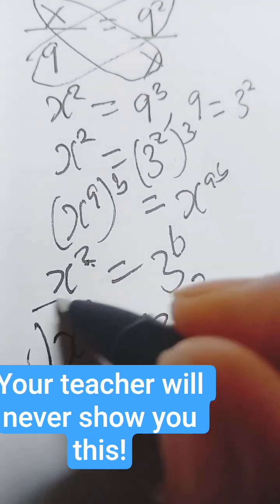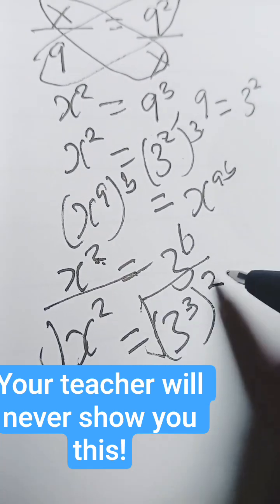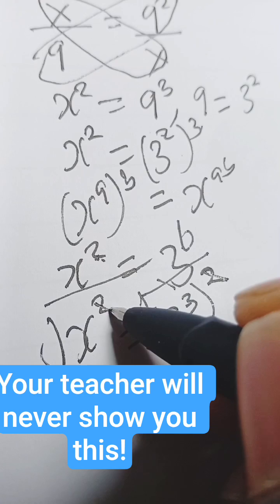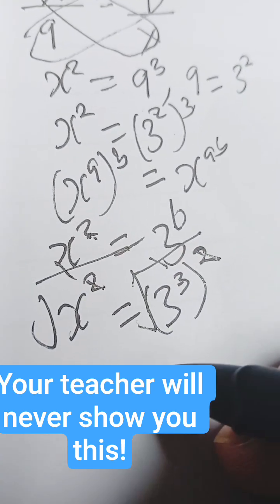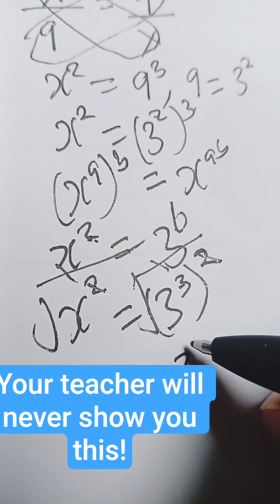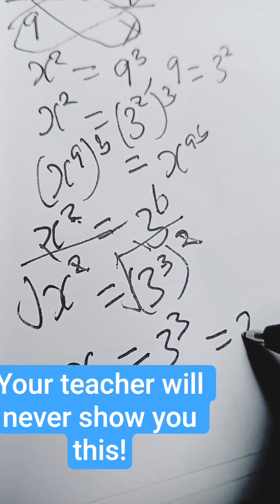So if we take the square root on both sides, this square here will cancel this, and we're going to have x equals 3 raised to the power of 3, and that is equal to 27.